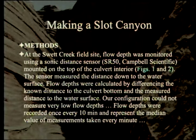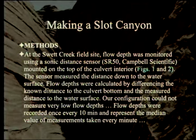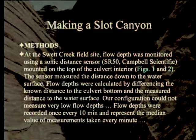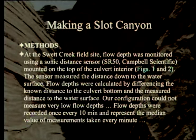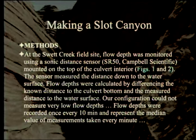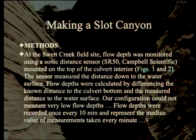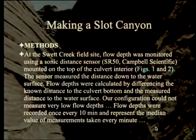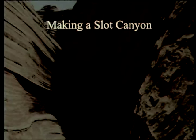Flow depths were calculated by differencing the known distance to the culvert bottom — measured when dry — and the measured distance to the water surface. The configuration doesn't measure very low flow depths because the beam is about 22 degrees and the culvert is round. Flow depths were recorded once every 10 minutes, representing the median value of measurements taken every minute, allowing data storage for seven months at a time.